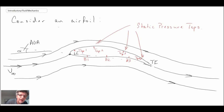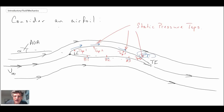Looking back at our airfoil: on the top surface there is high velocity near the leading edge — and then toward the back we have separated flow, which is why that tap further aft didn't change much. On the lower surface we have a lower velocity, and consequently higher pressure. That pressure differential between the lower surface and the upper surface is ultimately what results in lift on an airfoil.